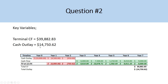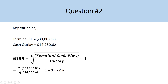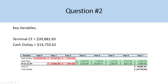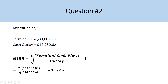We can then input this into the formula: terminal cash flow of $39,882.83 in the numerator, cash outlay of $14,750.62 in the denominator, root of seven because year seven is the end of the investment horizon, and we subtract one to get a modified internal rate of return of 15.27%.